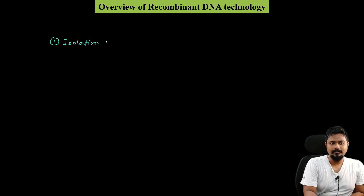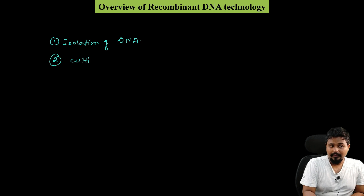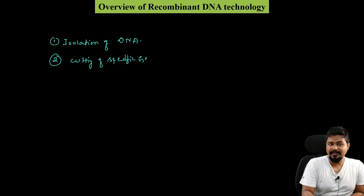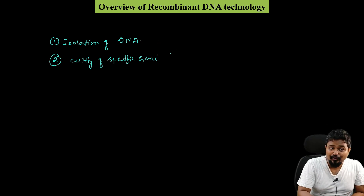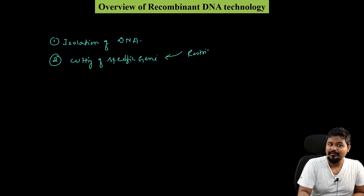Let me summarize the steps. First, isolation of DNA. Then, cutting of specific DNA — cutting a specific gene from the DNA using restriction enzymes.